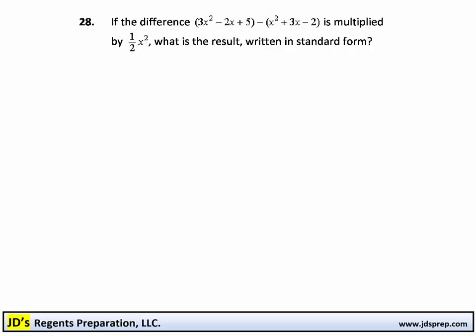This problem asks us to find the difference between two trinomials, 3x squared minus 2x plus 5, and the second, x squared plus 3x minus 2, and it wants us to take the result of this and multiply it by 1 half x squared.